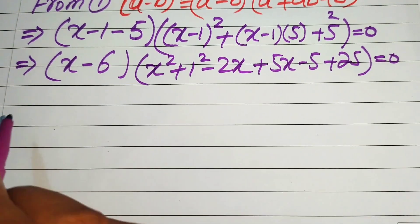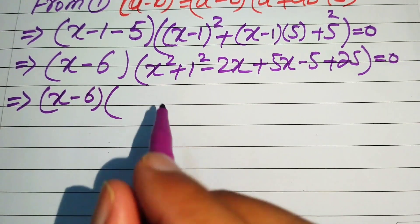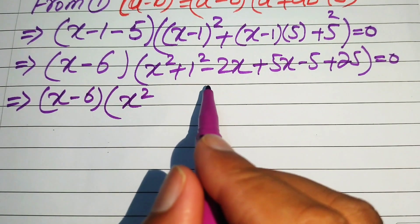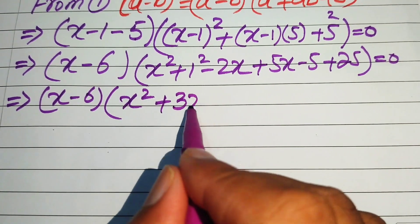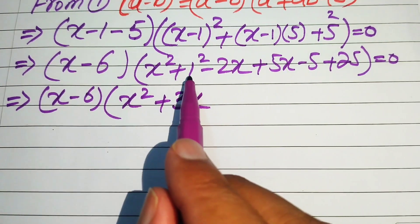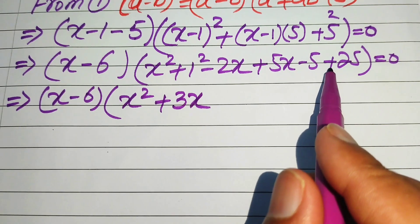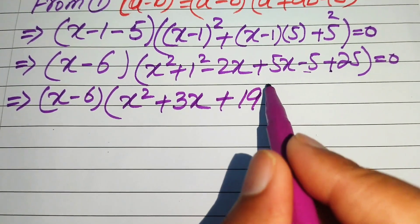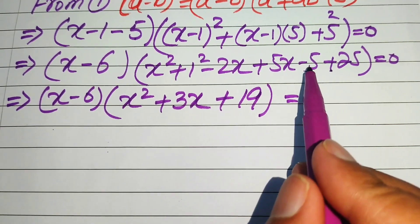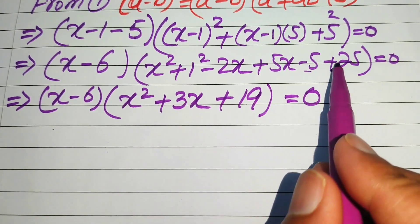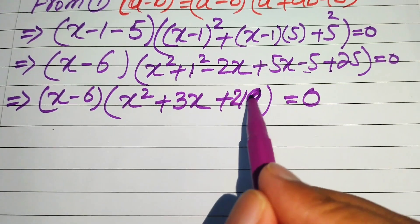Collecting like terms: we have x minus 6, then x squared, and minus 2x plus 5x equals plus 3x. For the constants, 1 minus 5 plus 25 equals 21. So the expression simplifies to (x minus 6)(x squared plus 3x plus 21) equals 0.